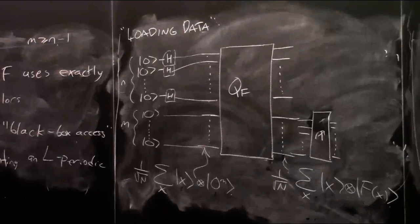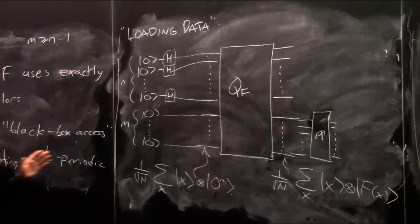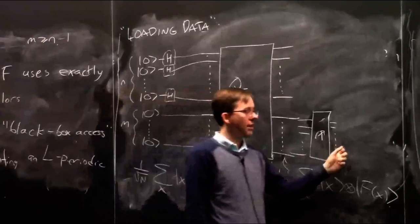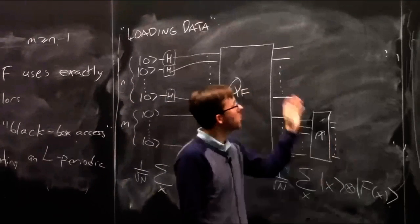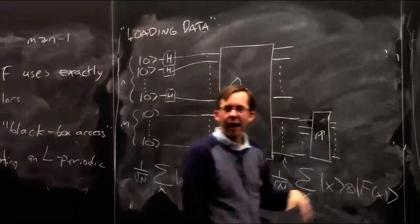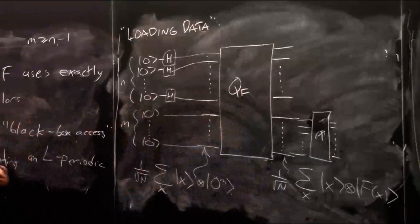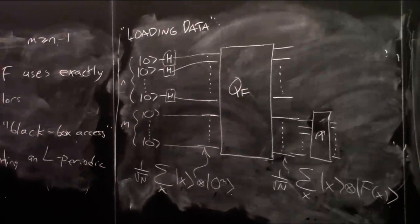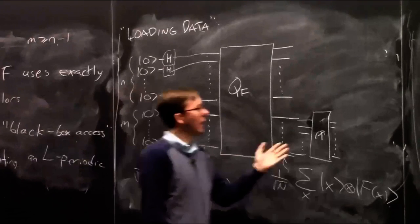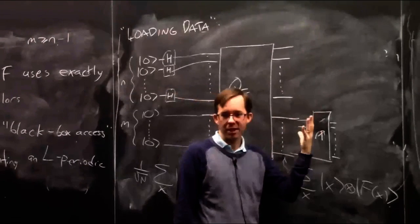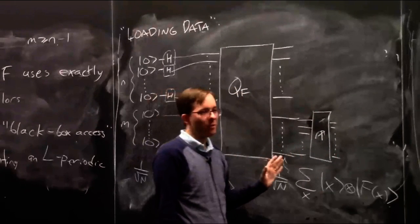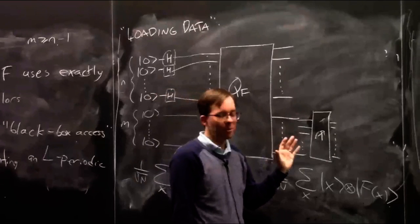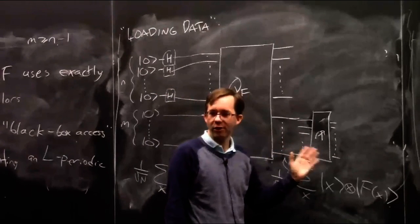Once we do that, it reduces us down effectively to an n-qubit state. What's funny is the algorithm is not even going to bother looking at the classical measurement outcome. Therefore, if you recall the principle of deferred measurement from the homework, you don't actually need to do this measurement step — but everyone agrees it makes things conceptually simpler.